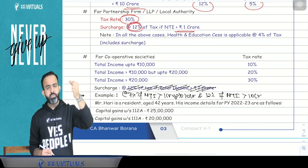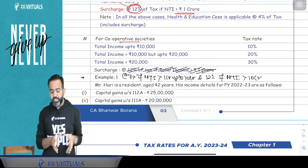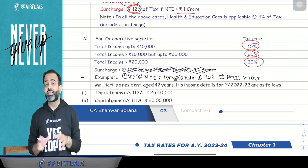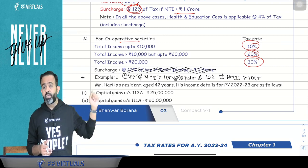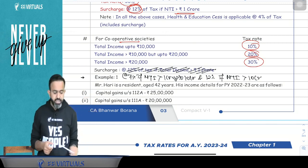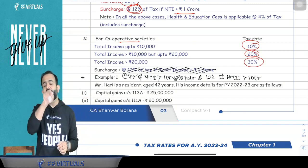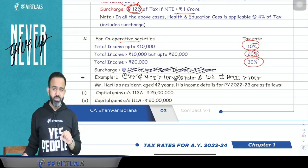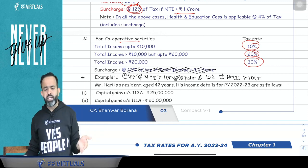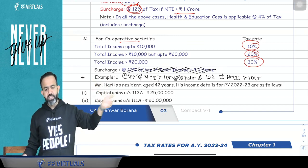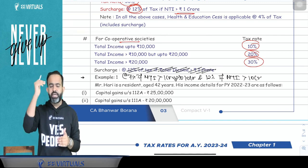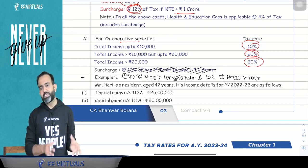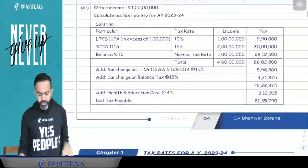In case of partnership firm, LLP, and local authority, tax rate is flat 30%. Surcharge is applicable at 12% if total income is more than ₹1 crore. In case of cooperative society: up to ₹10,000 — 10%; ₹10,000 to ₹20,000 — 20%; more than ₹20,000 — 30%. Surcharge is applicable. There is an amendment: surcharge for cooperative society is now applicable like a domestic company — 7% if net taxable income is more than ₹1 crore up to ₹10 crore, and 12% if more than ₹10 crore. First calculate tax, add surcharge, then always add health and education cess at 4%.